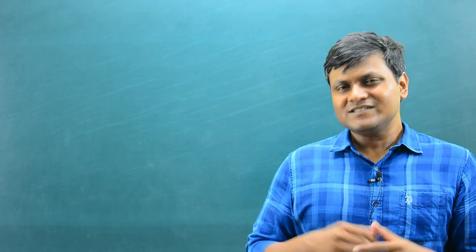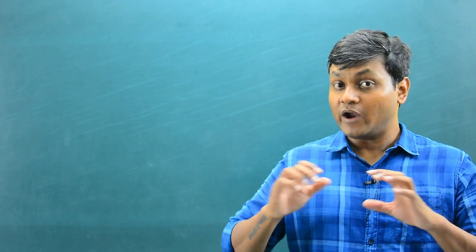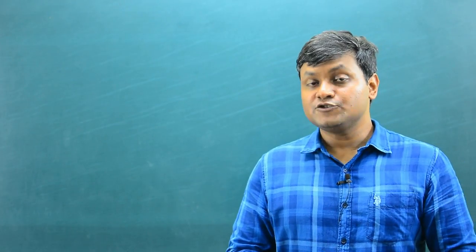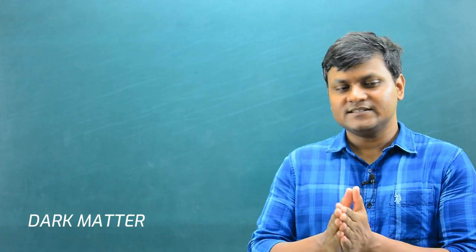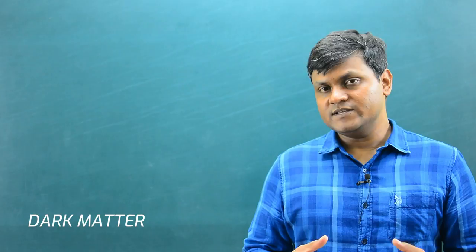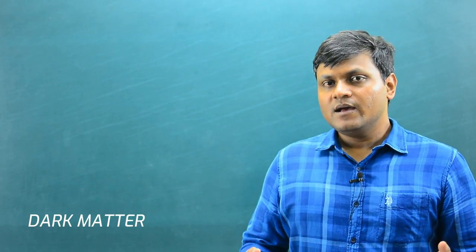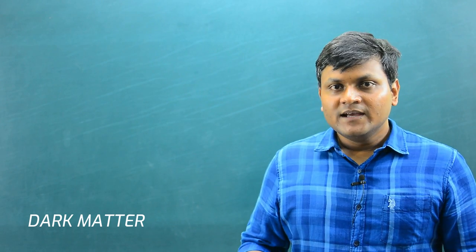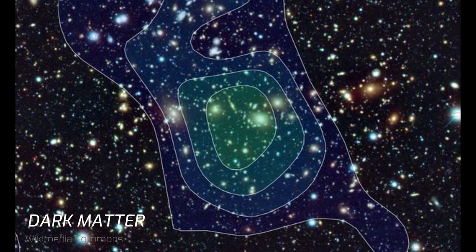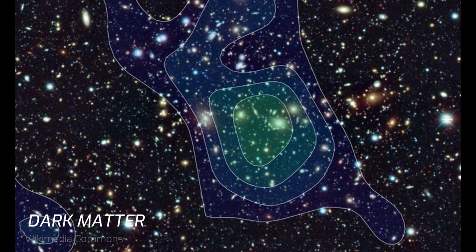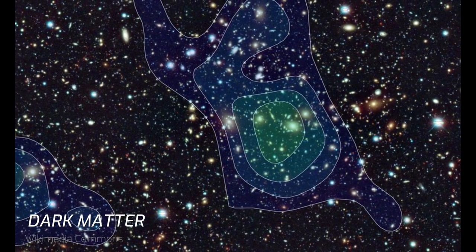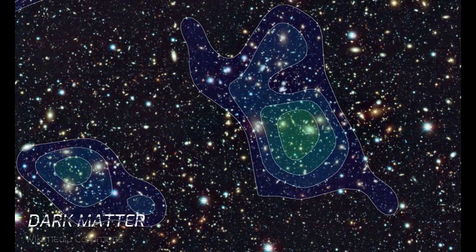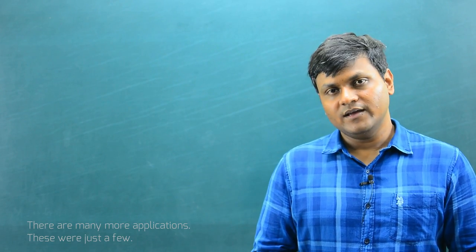Gravitational lensing can also brighten up the object behind the lens. Finally, one of the very important uses of this technique is to map the presence of dark matter. Dark matter occupies around 80 to 85 percent of the matter in our universe but does not interact with light, so we cannot see it via telescopes. Scientists can map out the presence of dark matter in galaxies by looking at the amount of deflection of light radiation taking place, giving a topographical map of matter distribution in the night sky.